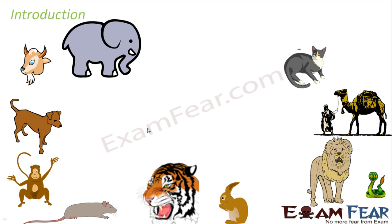There are a lot of life forms which we actually do not experience in our day-to-day life. Here on the screen you can see some of the animals which we are quite familiar with — elephants, dogs, monkeys, rats, tigers, rabbit, lion, camel, cat, snake. These are animals we are quite familiar with.